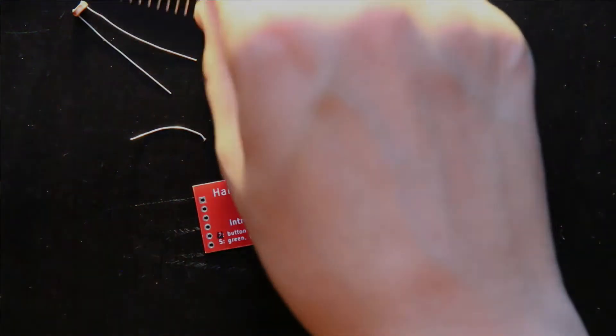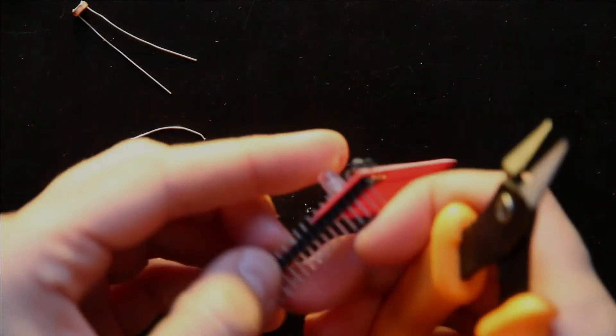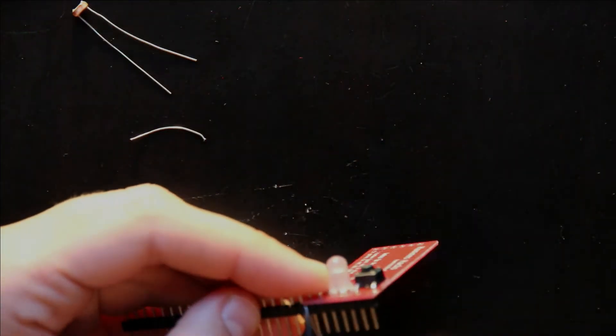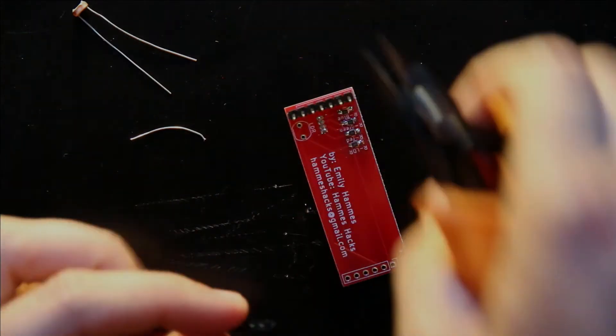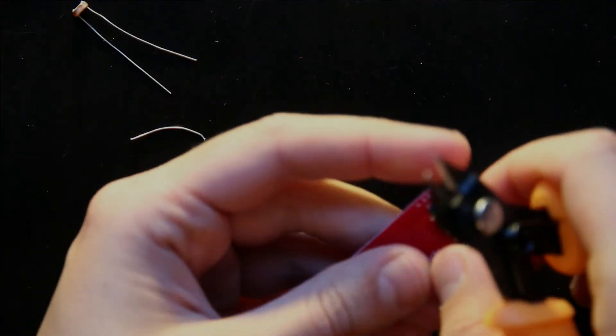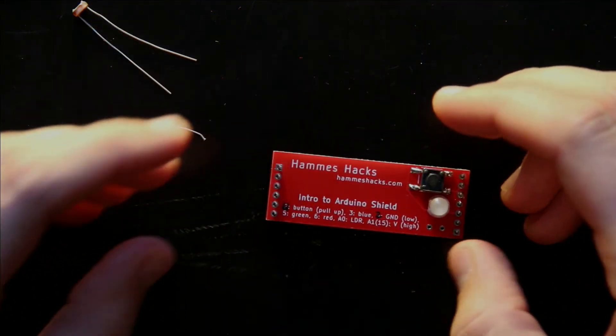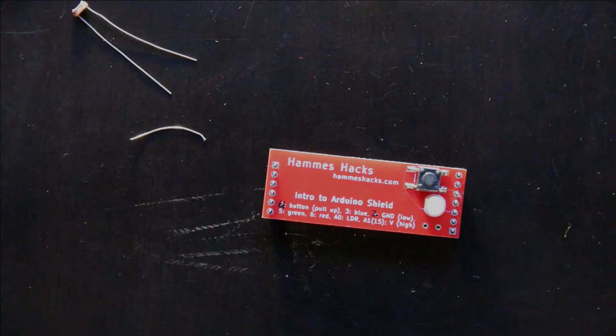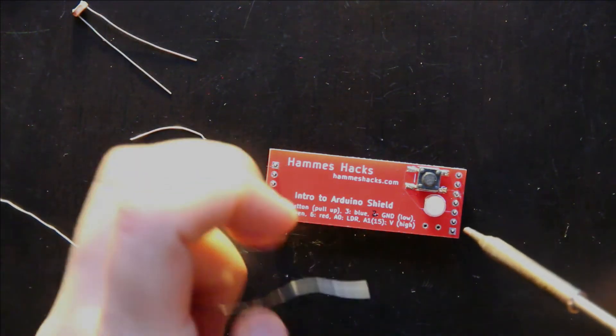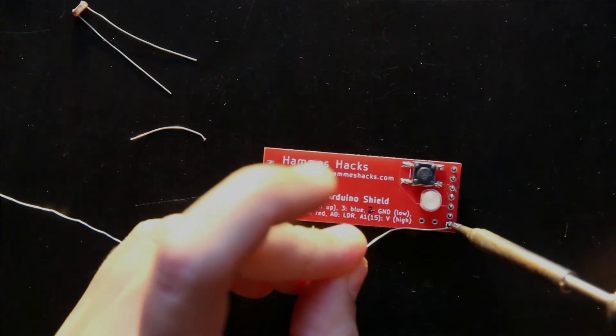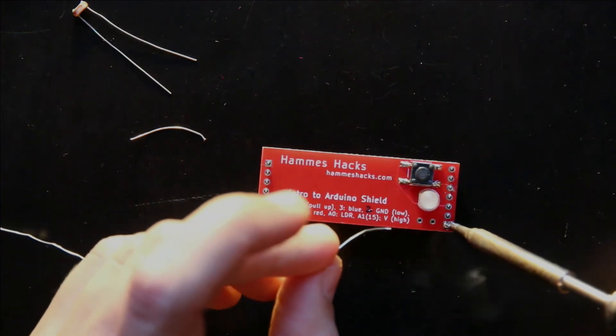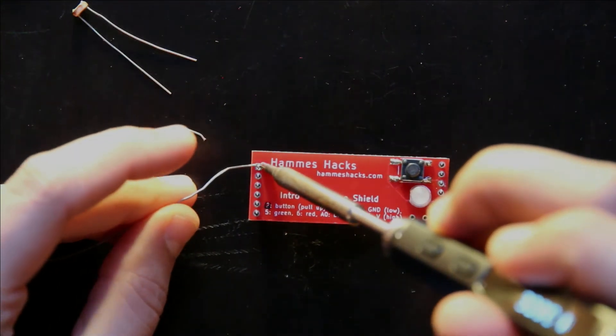The next thing to do is to solder on the pin headers. And I just go ahead and measure it by sticking it in, and then chopping it off. And just like with the LED, I start by only soldering one pin, usually the square one, but it doesn't actually matter which one you solder first, on both sides.